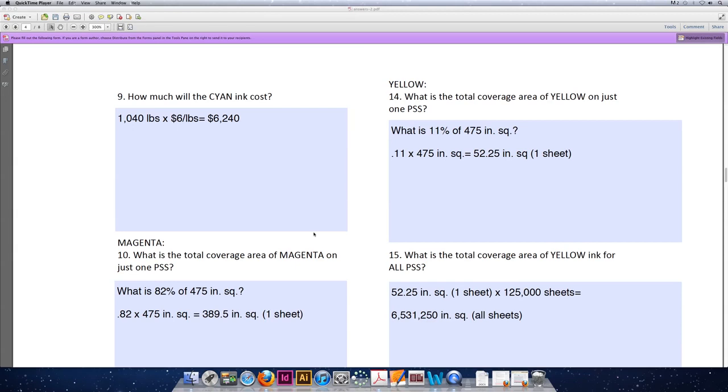475 square inches, again, comes from the total coverage area of one sheet of paper if we had 100% coverage, but we only have 11%. 0.11 times 475 inches squared is 52.25 square inches for every one sheet of paper.